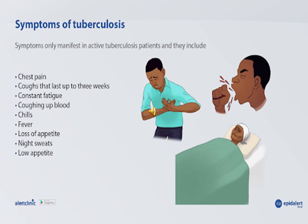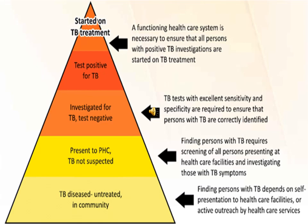A functional healthcare system should find all persons who have TB and are undiagnosed and untreated. When they present to healthcare facilities, they should be screened through active outreach — investigating all persons presenting with TB symptoms. A functioning healthcare system must ensure all persons with positive TB investigations are being treated with anti-tuberculosis therapy.